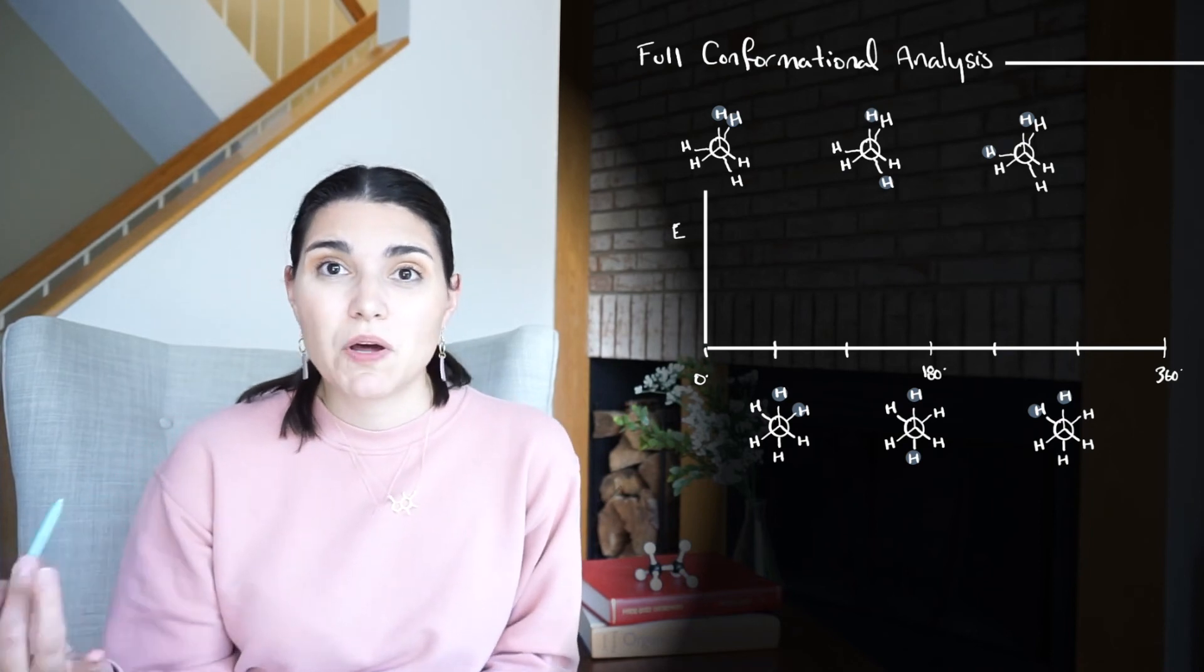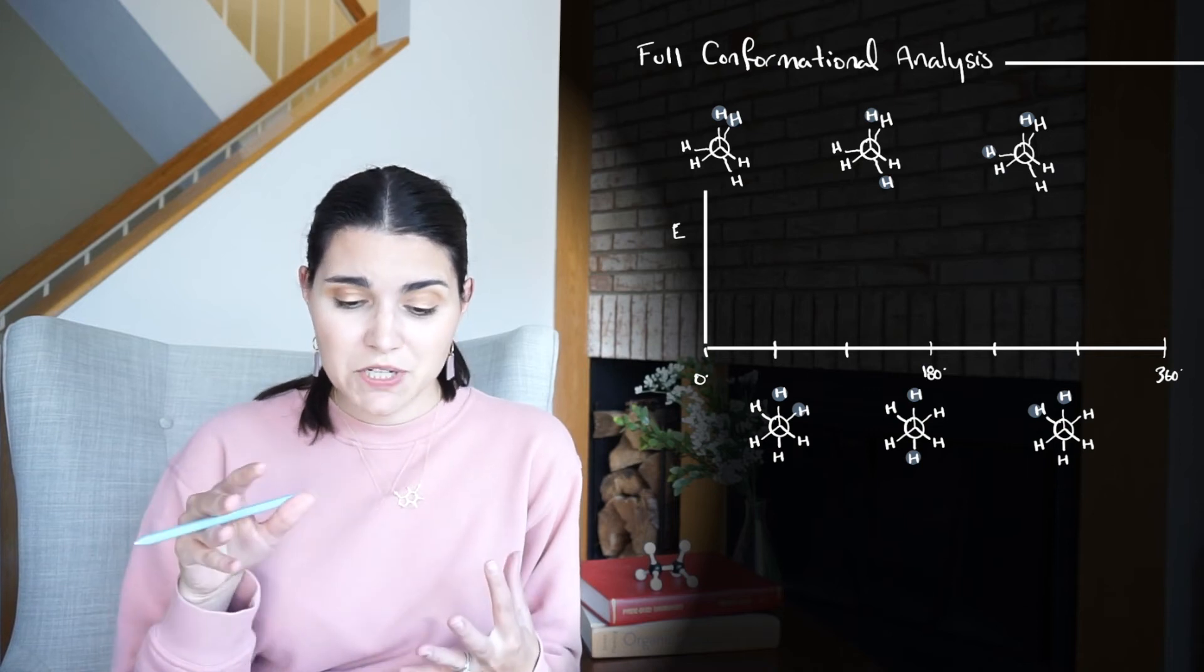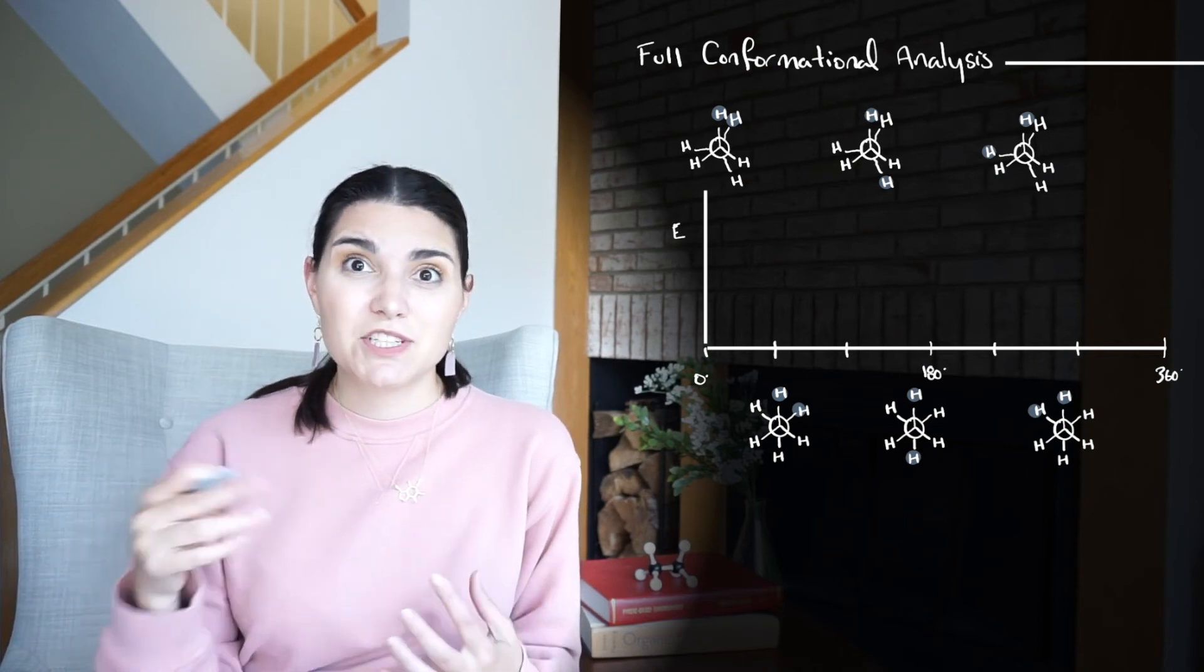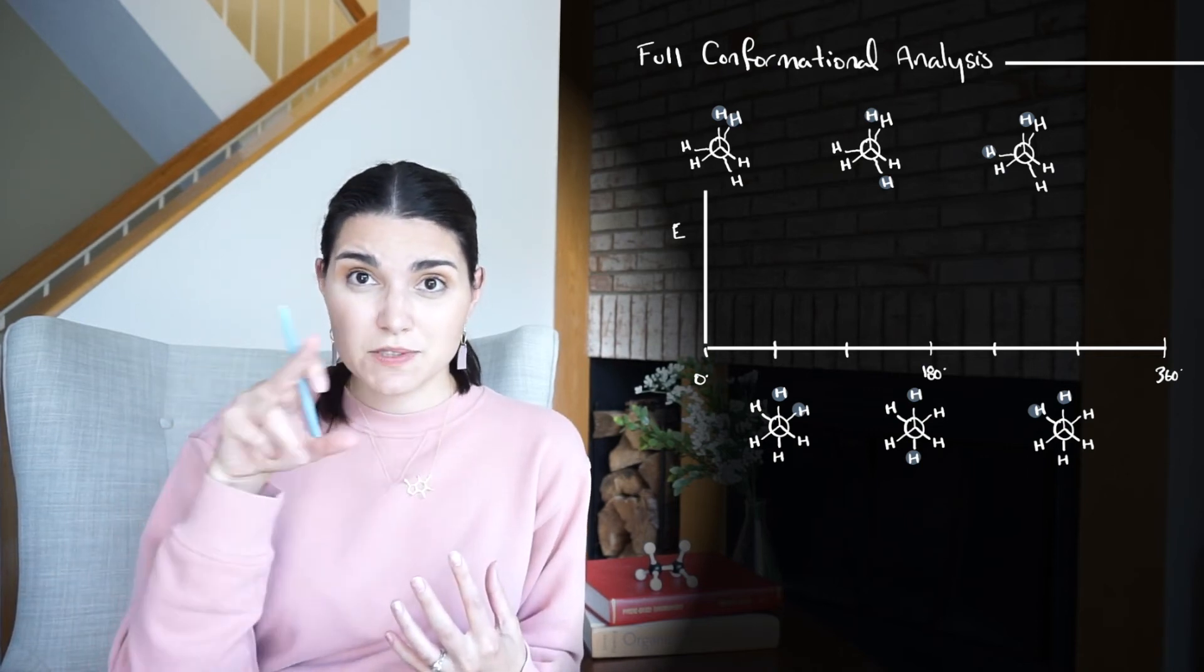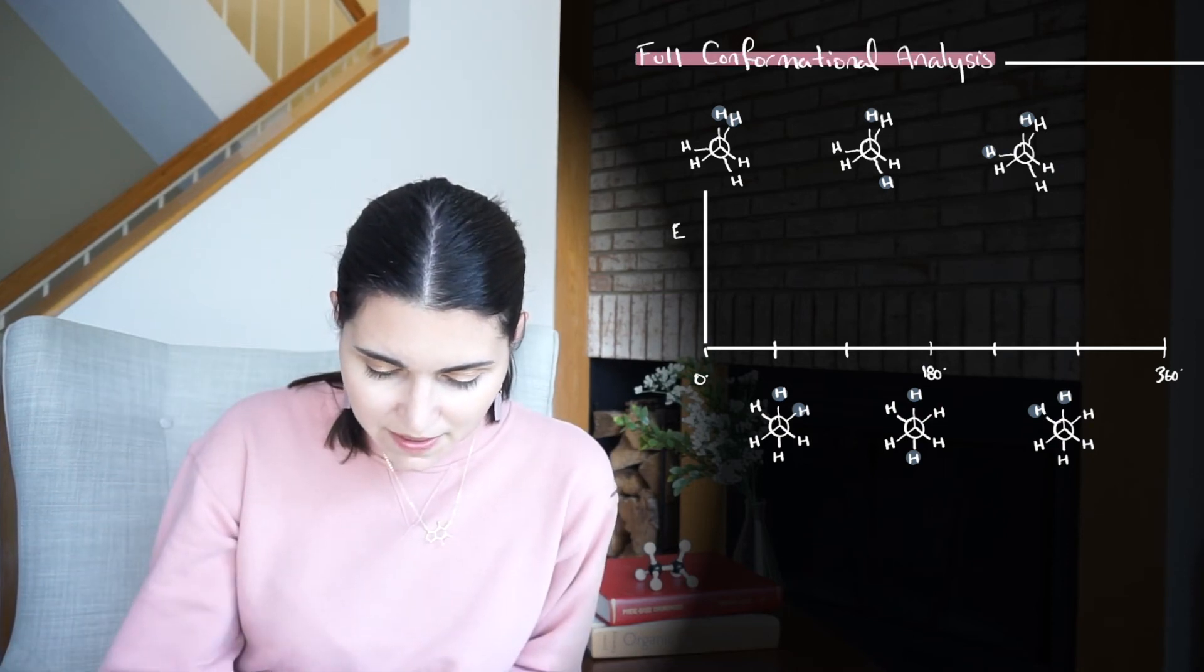So we can actually plot a graph of energy versus the dihedral angle around an ethane Newman projection, and we can look at the way the energy changes as one of the carbons rotates and we keep the other one fixed. And that's called a full conformational analysis.